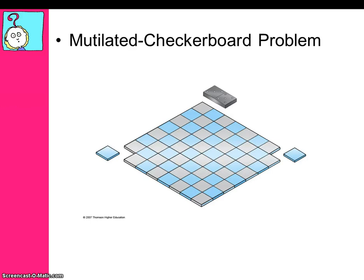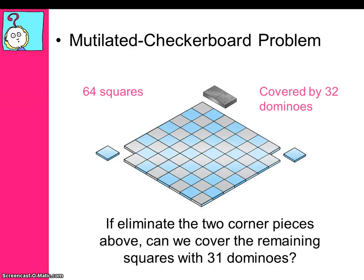The problem is this: you have a standard checkerboard comprised of 64 squares, which can be covered by 32 dominoes. The question is, if we were to take the two corner pieces away, can we cover the remaining squares with 31 dominoes?